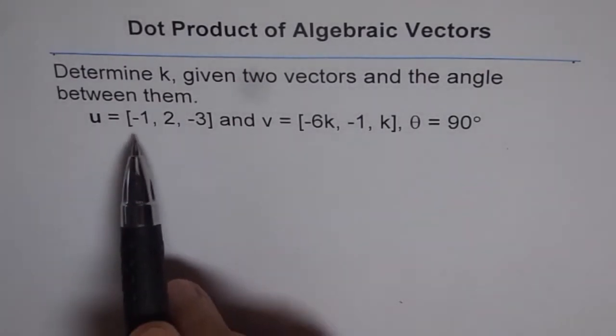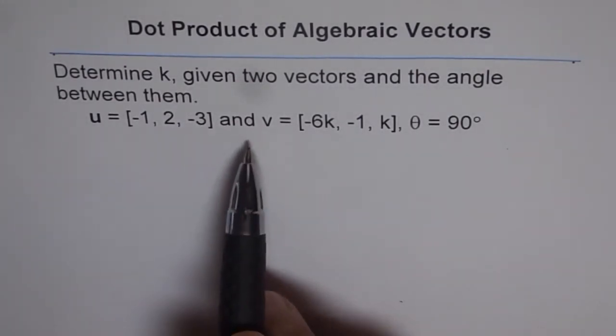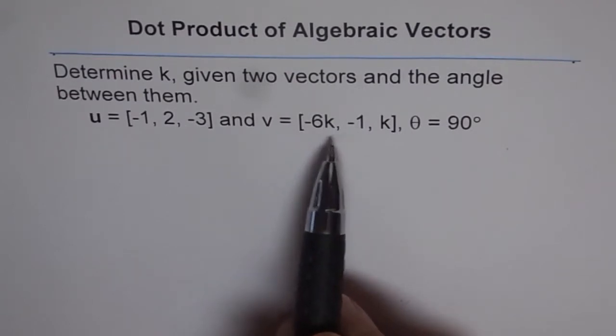Vector u is [-1, 2, -3], and vector v is [-6k, -1, k].